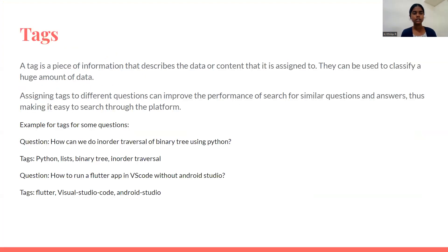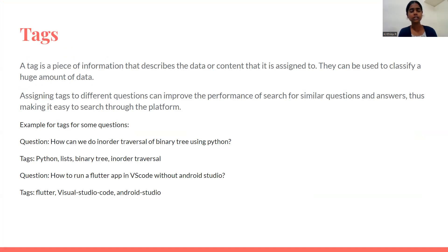Now let us see what tags are. A tag is a piece of information that can be used to describe the data or the content that it is being assigned to. They can be used to categorize the data into different subcategories. Basically, what we propose is that we have to assign different tags to questions to improve the performance.